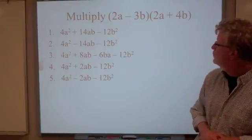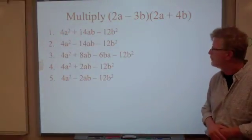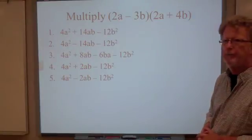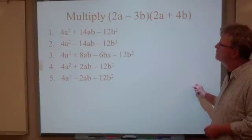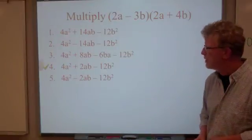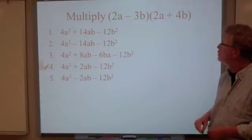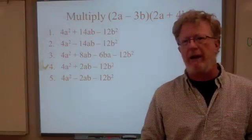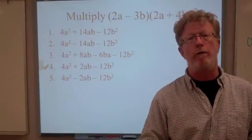Okay. Try this one out. 2a minus 3b times 2a plus 4b. And once again, pause it. I'll be here when you return. And I'm hoping you got number 4. 4a squared plus 2ab minus 12b squared. If you didn't get these and you try it again and you still don't get it, make sure you come see me tomorrow and we'll go over it together.